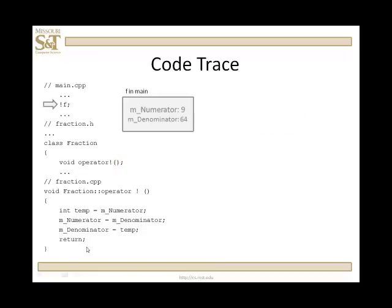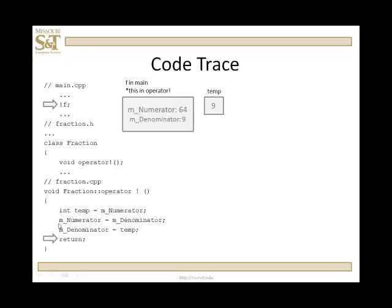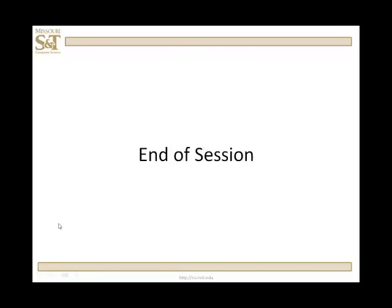Let's go through this. We start with f in main being 9/64ths. We call the function. I create temp — it becomes 9. Numerator becomes denominator. Denominator becomes temp. I return, and f is changed to its reciprocal. And that's that for the unary operators.